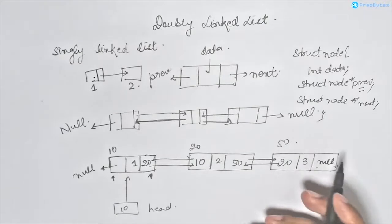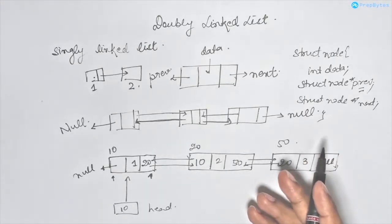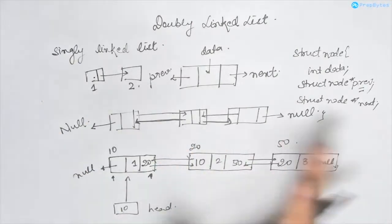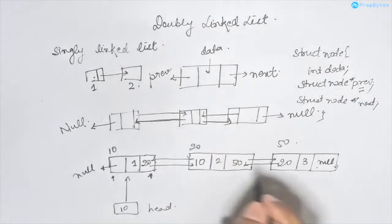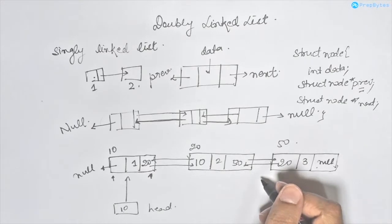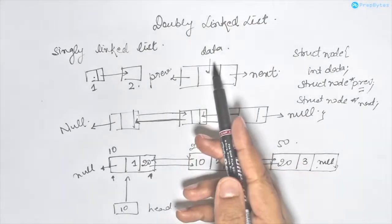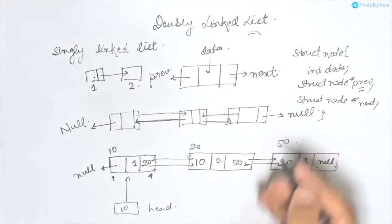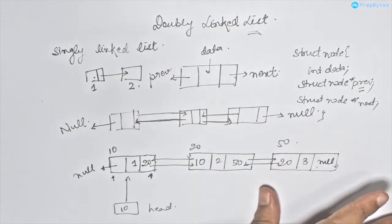So what is the benefit of a doubly linked list over a singly linked list, and what are the disadvantages? The advantage is that we can move in both directions. The disadvantage is that there is an extra overhead of maintaining one more pointer, and operations like insertion and deletion are comparatively more complex in case of a doubly linked list. So now let's see how we do insertion and deletion in a doubly linked list.